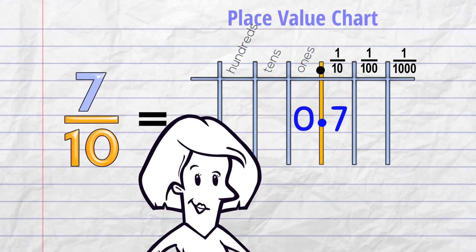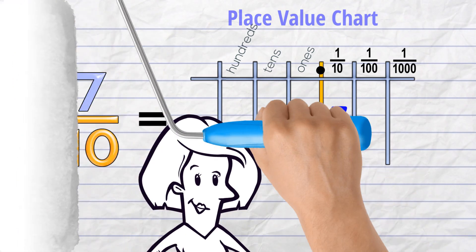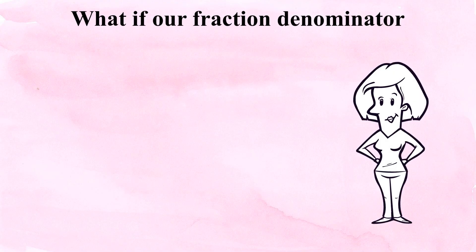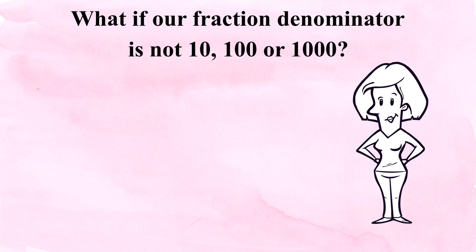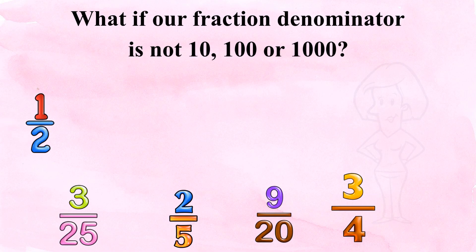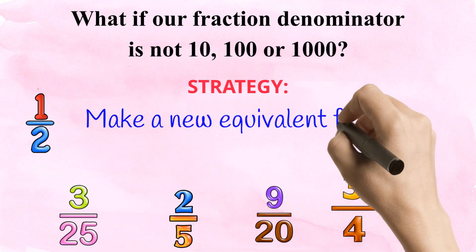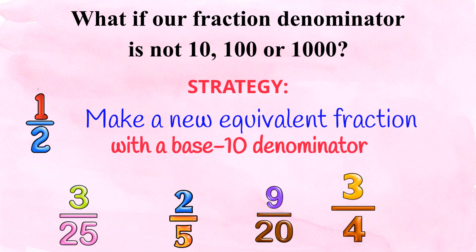It's just the opposite of what you've already learned when you turn a decimal into a fraction. What if our fraction has a denominator that's not 10 or 100 or 1000? Then our go-to strategy is to make a new equivalent fraction with a friendly base-10 denominator!